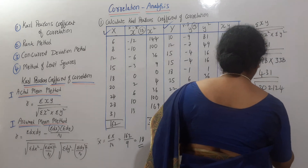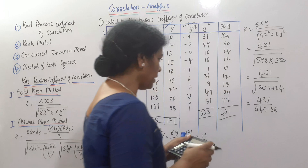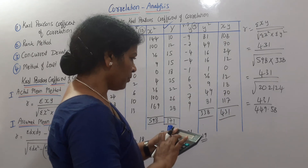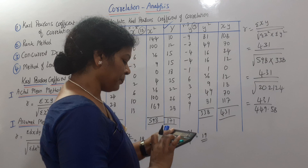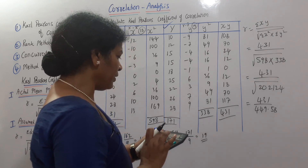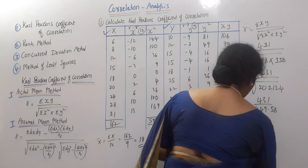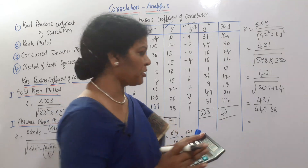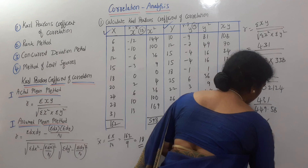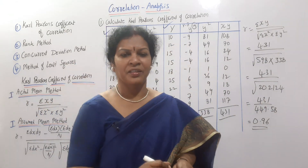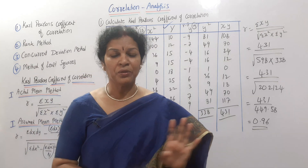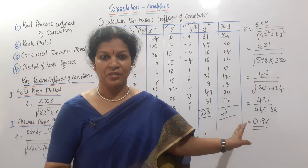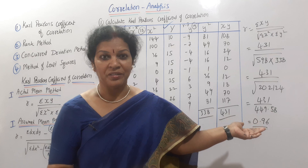The denominator comes to 449.58. So r equals 431 divided by 449.58, which gives approximately 0.9586, or about 0.96. The answer is positive, close to 1, indicating a strong positive correlation.